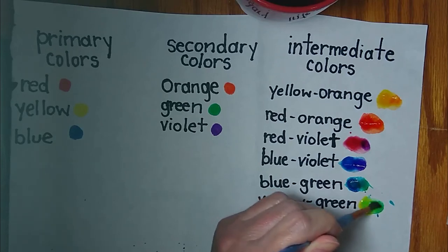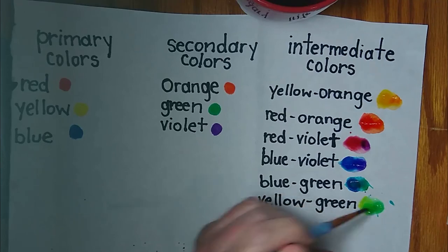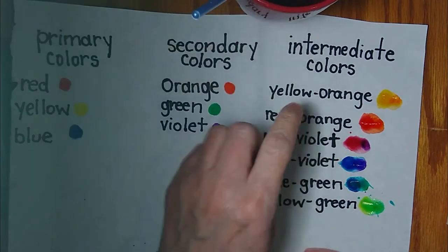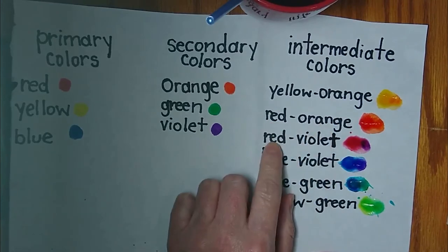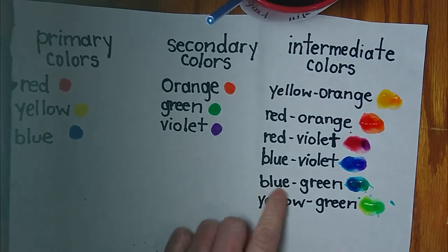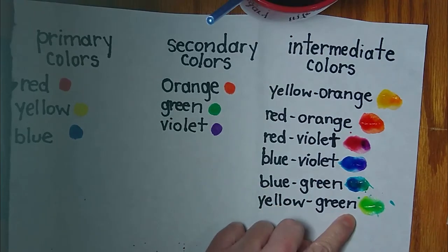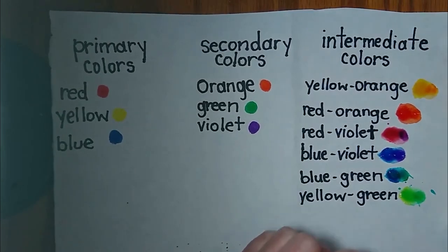You see why? Because we're going to be doing this next time. We're going to be making these colors on our castles. So now I have yellow-orange, red-orange, red-violet, blue-violet, blue-green, and yellow-green. I hope you've enjoyed today's lesson and I hope you're all doing well and I'll see you next week.